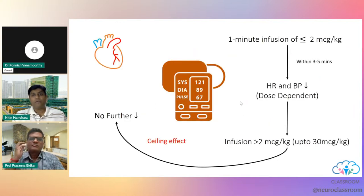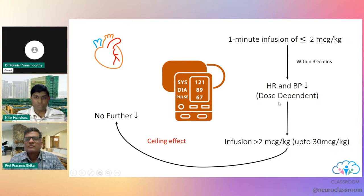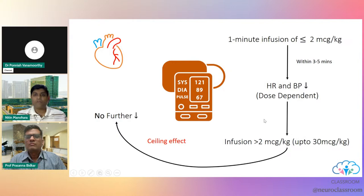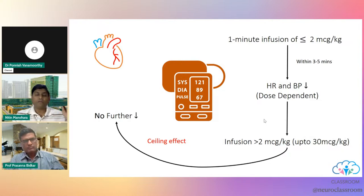Regarding cardiovascular effects: as you start the infusion there will be a small dose-dependent decrease in heart rate and blood pressure, but there is a ceiling effect so no further decrease occurs beyond a certain dose. Whenever you use remifentanil, you should have a vasopressor ready to counter the hypotension. It is always wise to have a vasopressor infusion running alongside remifentanil.